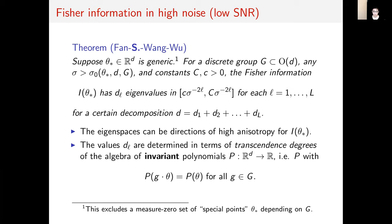In the high noise regime, the Fisher information is more complicated. We show that the Fisher information has different numbers of eigenvalues at different scales with respect to the noise. The corresponding eigenspaces are directions of high anisotropy for the Fisher information. To determine the number of eigenvalues d_L at scale σ^(-2L), we use an algebraic object called the transcendence degree of the algebra of invariant polynomials for the group. That algebra is simply a set of polynomials whose values over each group orbit are constant.